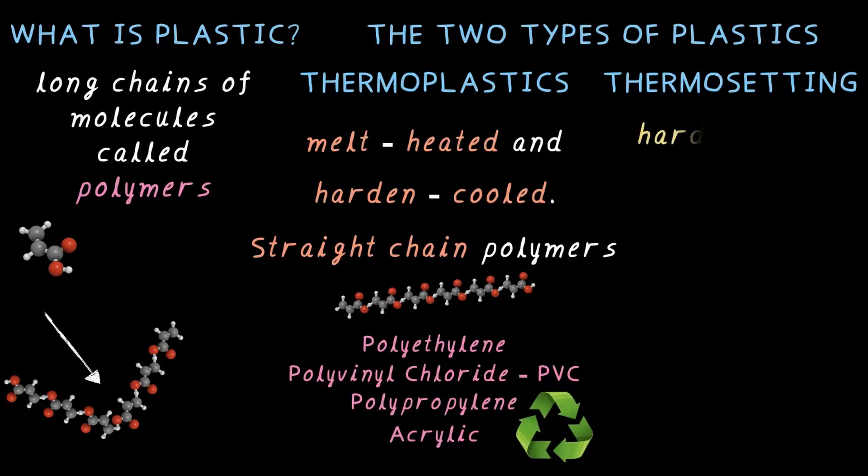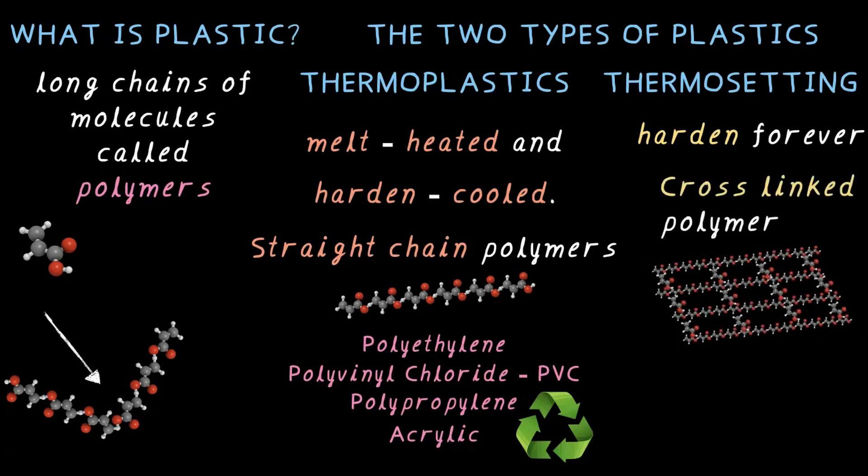Thermosetting plastic is the one that is hardened forever. They are made of cross-linked polymers, a structure looking like this. Examples include melamine, Formica, and Bakelite. What's important about thermosetting? Thermosetting plastics cannot be recycled.